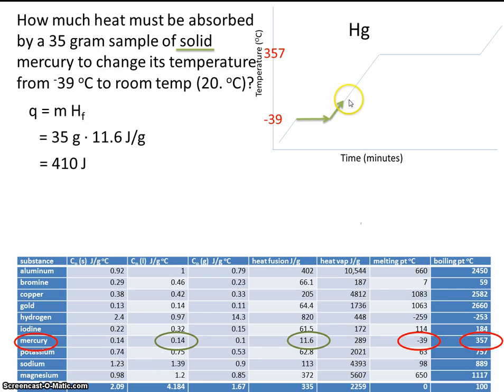Now we're at the slope, the second step. When you're on a slope, you have to use Q equals mcΔT. Once again, the mass is 35. The specific heat capacity is given to us here in the chart, it's 0.14. And it's final temperature minus initial temperature.